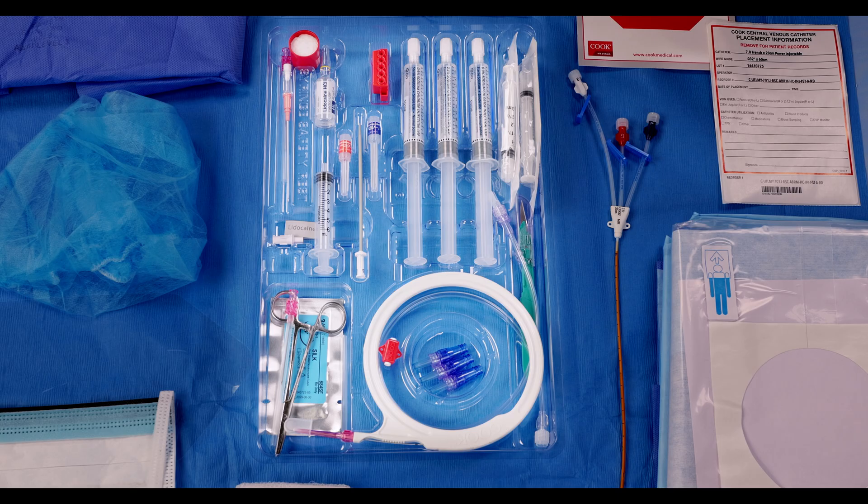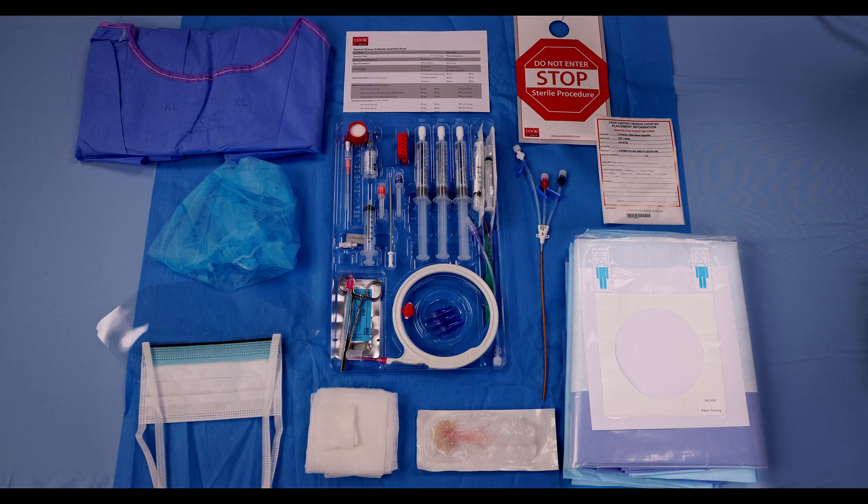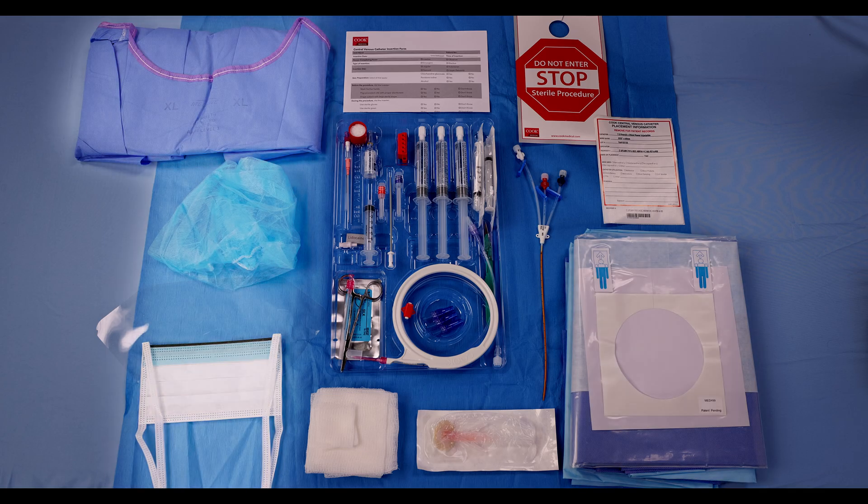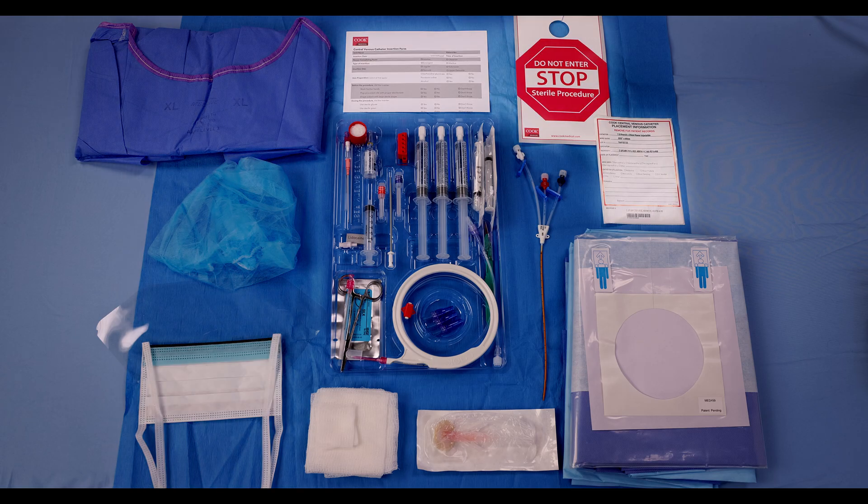A foam and locking sharps container, 8.5 French vessel dilator, 11-blade safety scalpel, pre-filled 10-milliliter saline flush syringes, luer lock injection caps with neutral displacement, transducing tubing for pressure monitoring, braided silk suture kit (includes a curved needle and needle driver for catheter stabilization), full-body fenestrated drape with tear-away feature for sterile field maintenance, cap, gown, and mask with eye shield to ensure procedural sterility, procedural checklist, and a sterile procedure stop sign door hanger.